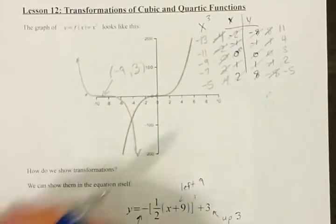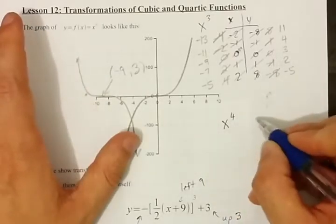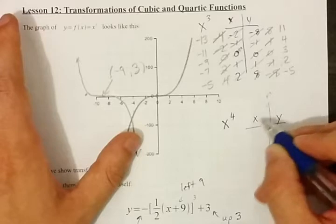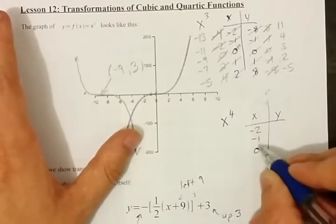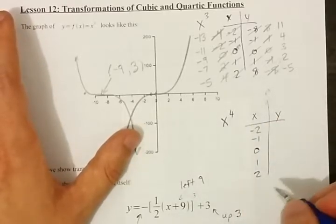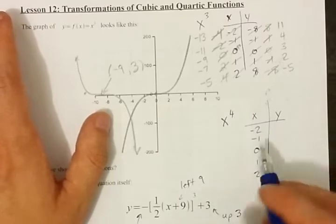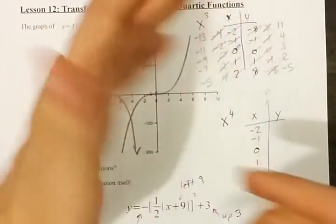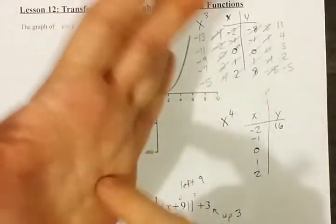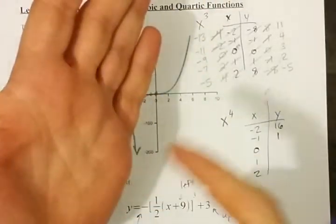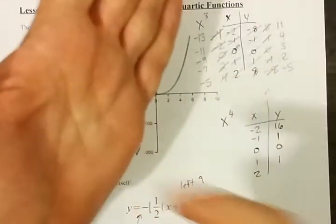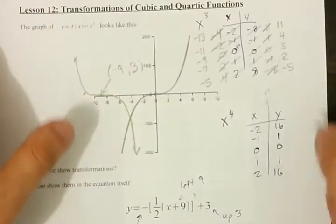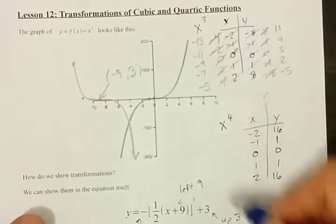You can transform quartic functions this way as well. The x to the 4 function has its own table of values that you can transform. Starting with x values negative 2, negative 1, 0, 1, 2 — you've got to probably memorize this too. If you don't memorize it, you can just do negative 2 to the power of 4 on your calculator: you'll get 16, then 1, 0, 1, 16. Then you can transform this in a similar way.